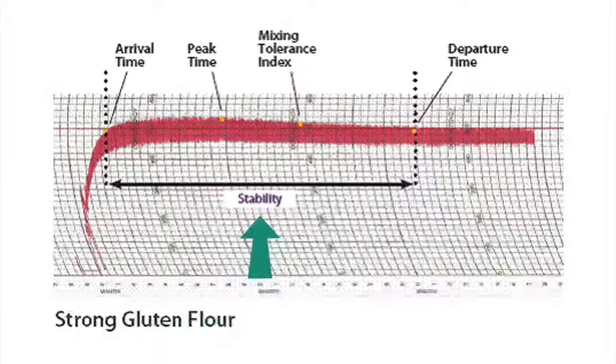Stability is the difference in time to the nearest half minute between the point where the top of the curve first intercepts the 500 BU line and the point where the top of the curve leaves the 500 BU line — up through the curve and back down. The longer the stability number, the more you should think this flour is stronger and needs more mix. Stability time is correlated with flour strength; flour with long stability times is generally more suited for hearth breads and variety bread production, and often requires longer mixing times.